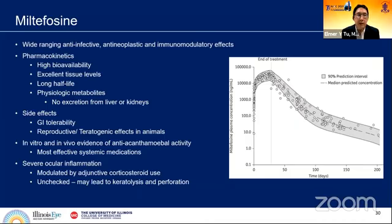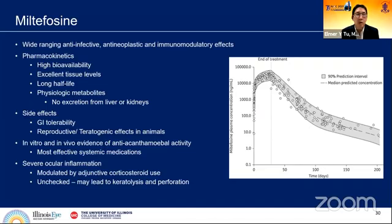In conclusion, miltefosine is a wide-ranging anti-infective, anti-neoplastic, immunomodulatory drug. The pharmacokinetics show very high oral bioavailability with excellent tissue levels widely distributed throughout the body and a long half-life, making it an ideal systemic medication for tissue-penetrating infection. The metabolism is broken down in individual cells into physiologic components, so there is no excretion from the liver or kidneys — explaining why toxicity is relatively low. Main side effects are GI tolerability. In my opinion, it is the most effective of all systemic medications currently described for acanthamoeba.